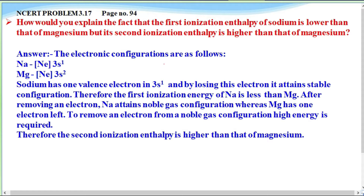The electronic configurations are as follows. For sodium, that is neon — 1s2, 2s2, 2p6 — which is a fully filled orbital, and in sodium there is one electron extra, that is 3s1. In the case of magnesium, neon is 1s2, 2s2, 2p6, and then 3s2.